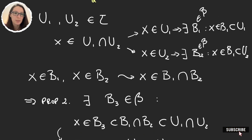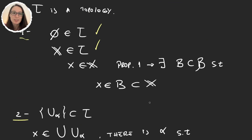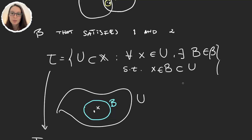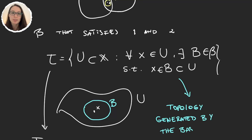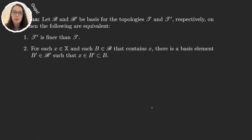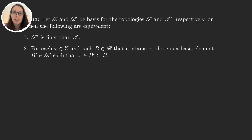Now that we have proven all three properties, we can say this is a topology — and we call it the topology generated by the basis B. Let's finish talking about bases with a lemma that will be very useful when comparing two topologies. We have two bases B and B' that are bases for τ and τ' respectively, meaning τ and τ' are generated by B and B'.